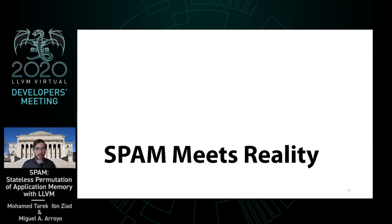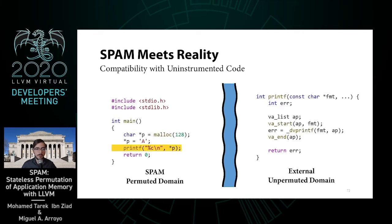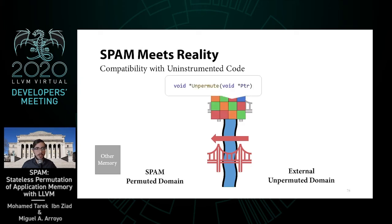Now let's discuss how SPAM deals with real-world code. SPAM requires a strict separation between application code and data from the permuted domain, shown on the left, and the external unpermuted domain, shown on the right. Otherwise, loads and stores at either side of this boundary may inadvertently corrupt memory. To remain compatible with uninstrumented code such as non-SPAM-aware shared libraries, we must have a mechanism to reliably cross this gap. Going back to our C snippet, printf is an example of external uninstrumented code, so its arguments need to be properly handled. We provide two primitives to allow interoperability with both domains, allowing only the necessary permuted data to cross the boundary where it is unpermuted.